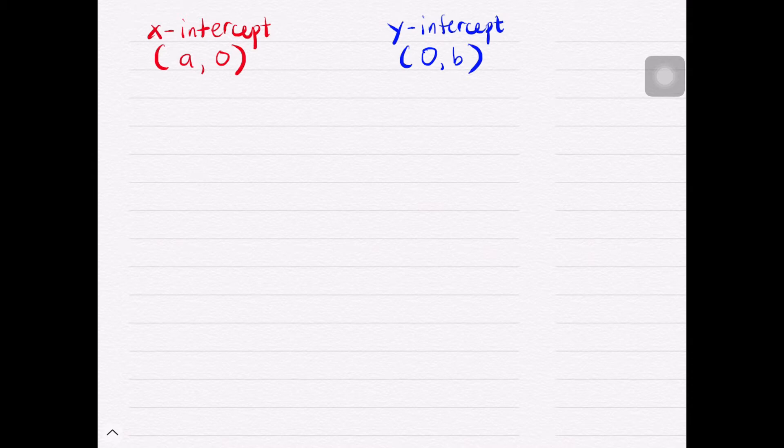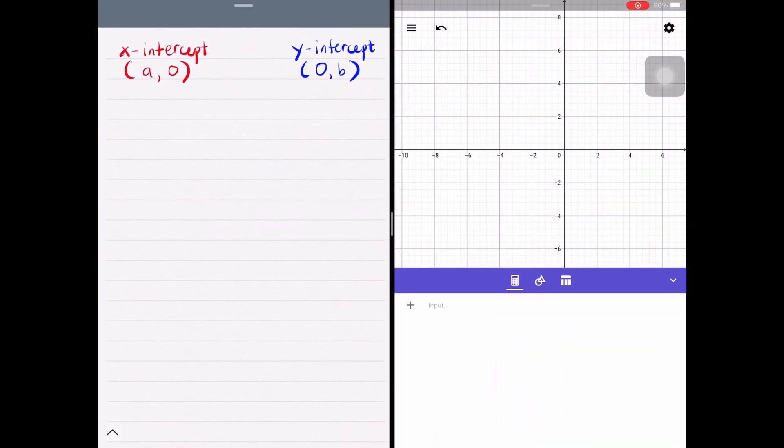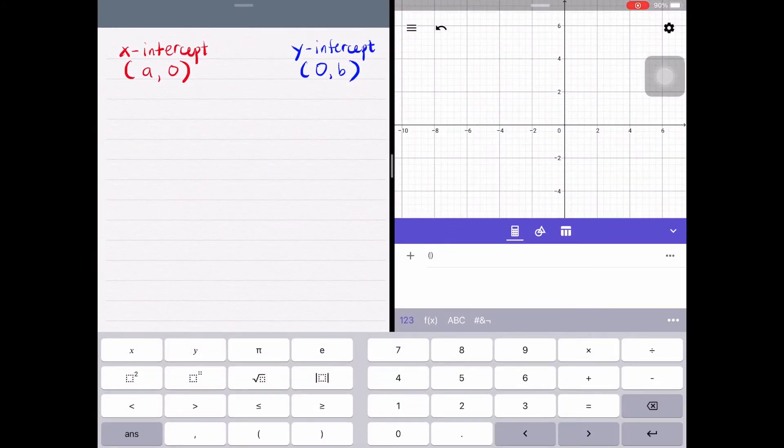To know their difference, let's have this example. Say we have a point (3, 0) and another point (0, 2). Notice that our point (3, 0) intercepts the x-axis. And yes, we have a value there for x which is 3 and our y-value is 0. As for point (0, 2), our x-value is 0 and our y-value is 2 and that makes it a y-intercept.